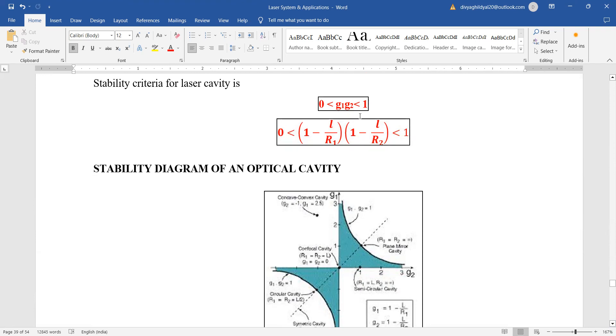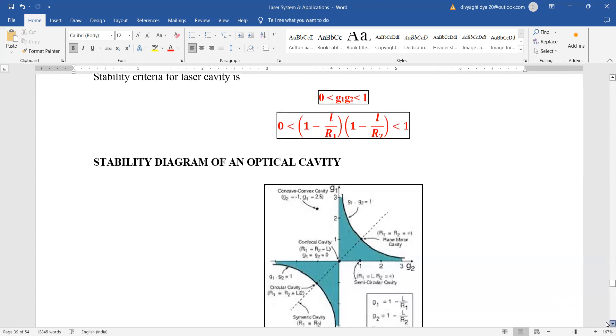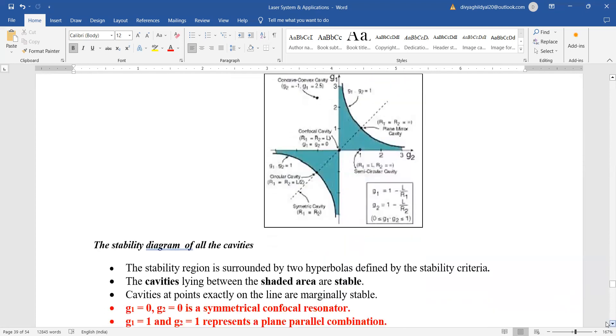So if we put the value of g1 and g2, then this criteria should be satisfied. Discuss stability diagram of an optical cavity. Here is the stability diagram of the optical cavity where we can see that the stability region has been surrounded by two hyperbolas.